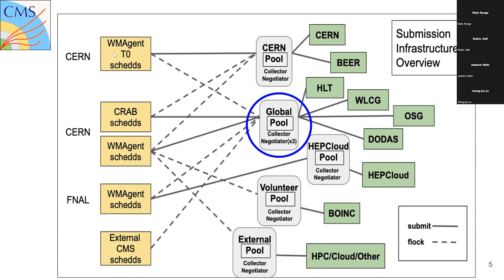There are different workload management systems: WMA for central production, CRAB for user analysis. There are external schedulers, and we have different pools — this presentation focuses on the Global Pool, but we also have a pool dedicated for services, a pool for volunteer resources, external pools, and cloud tools for HPCs.